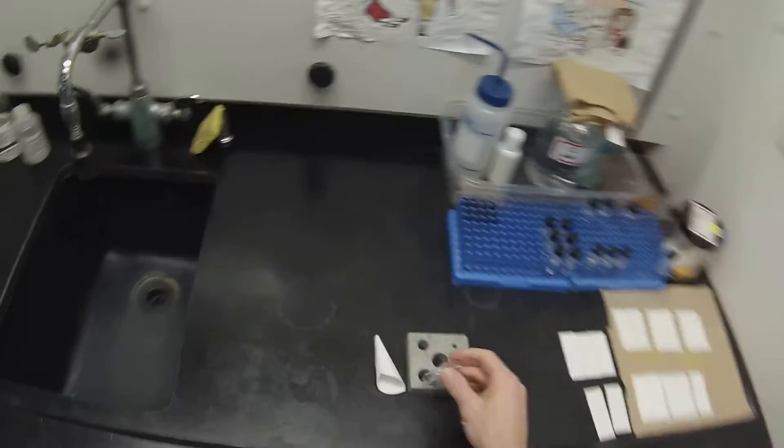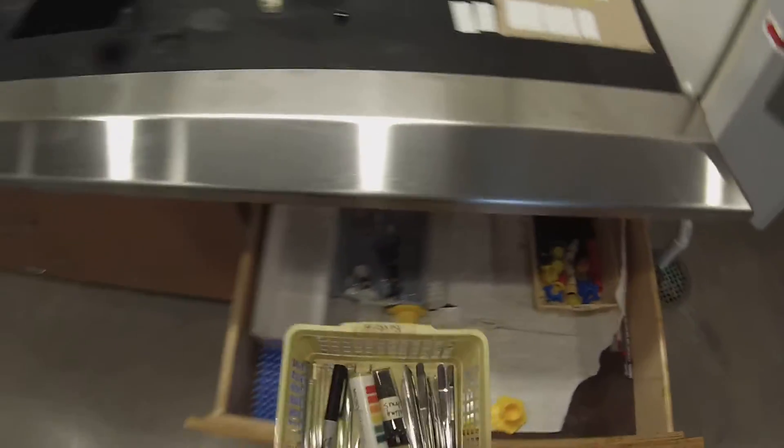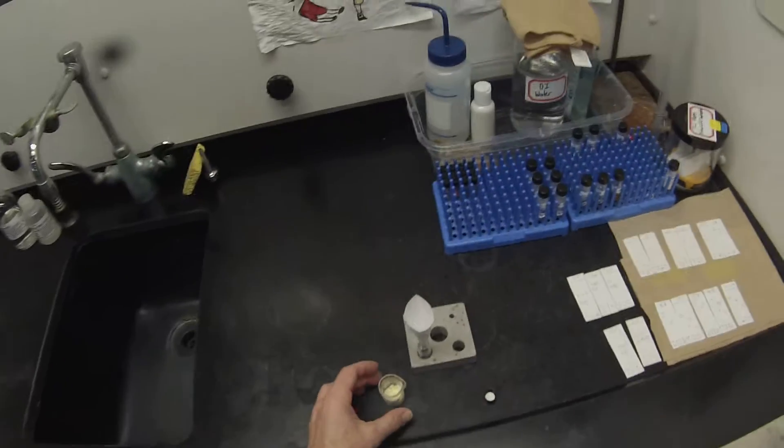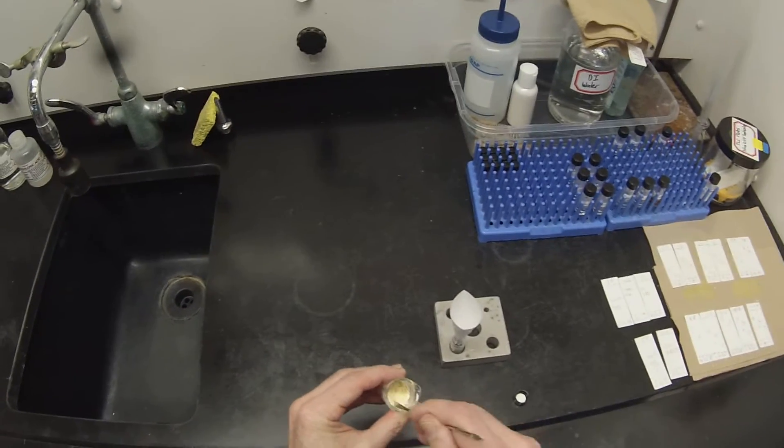Now we're going to sit that in our aluminum block. Stick our little funnel on there. We have a micro spatula. Kind of crunch that up a little bit so we don't get the big chunks to clog the funnel.